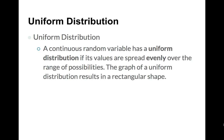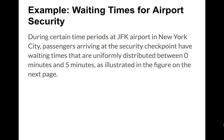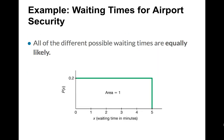A uniform distribution looks like a rectangle. Here's an example: waiting times at an airport. Waiting times are a very common uniform random variable. This example is about waiting times at JFK airport in New York for people to get through the security checkpoint. If you hop in line at a certain point, you'll wait anywhere between zero and five minutes to get through security. It's a uniform random variable because any time in that range is equally likely — it's not more likely that you'll get three minutes or four minutes. They're all equally likely, which means they're evenly spread across the range of values.